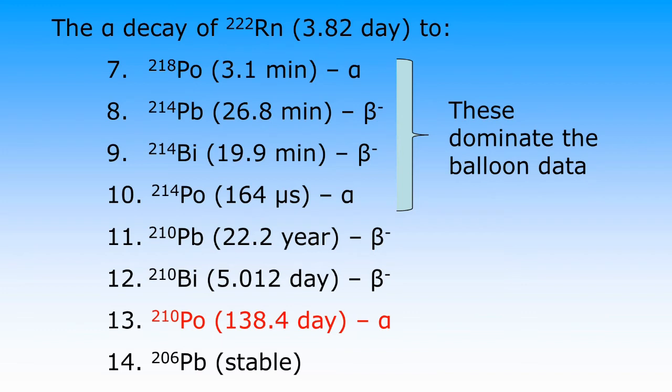The lead-214 half-life of 27 minutes would dominate the decay once the polonium-218 is done. The bismuth-214 decay would follow the lead-214 decay extending the average half-life. The polonium-214 alpha decay follows each bismuth-214 decay quite quickly on average.